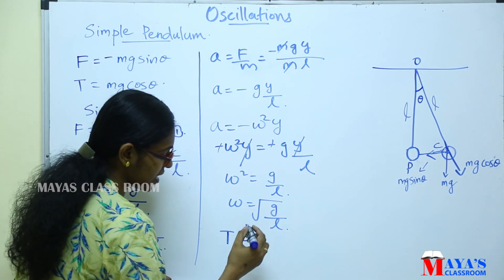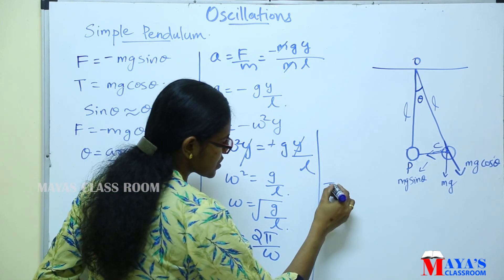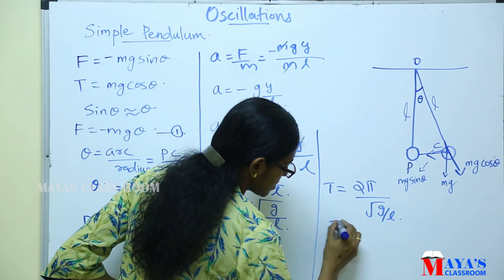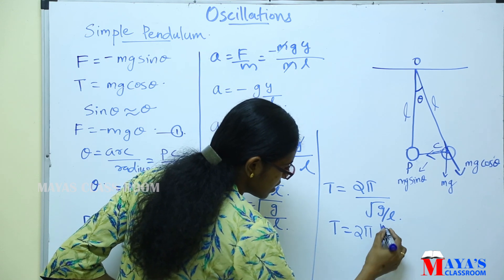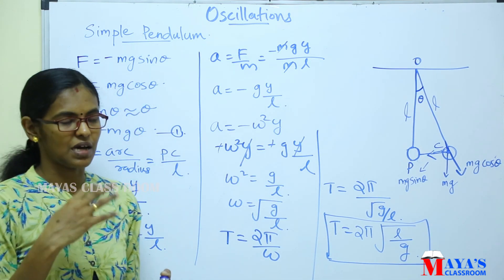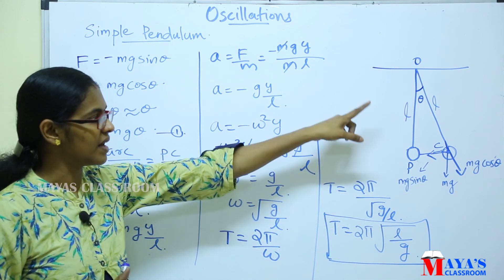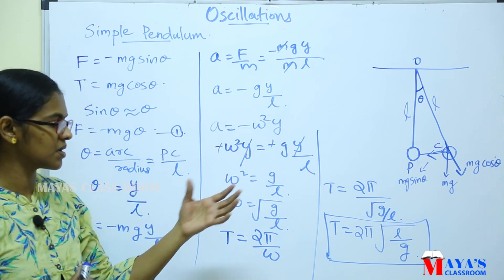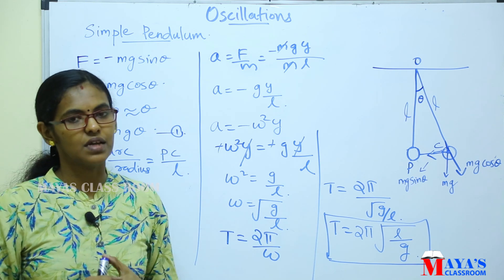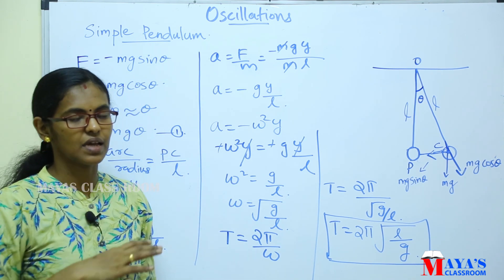The time period is represented by T equals 2π/ω. Substituting ω equals √(g/L), we get T equals 2π divided by √(g/L), which rearranges to T equals 2π√(L/g). This is the expression for the time period of a simple pendulum, where L is the length of the string and g is the acceleration due to gravity.